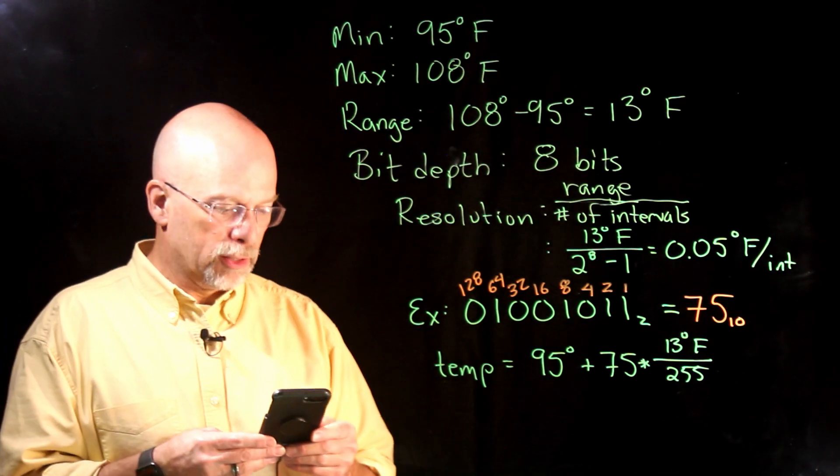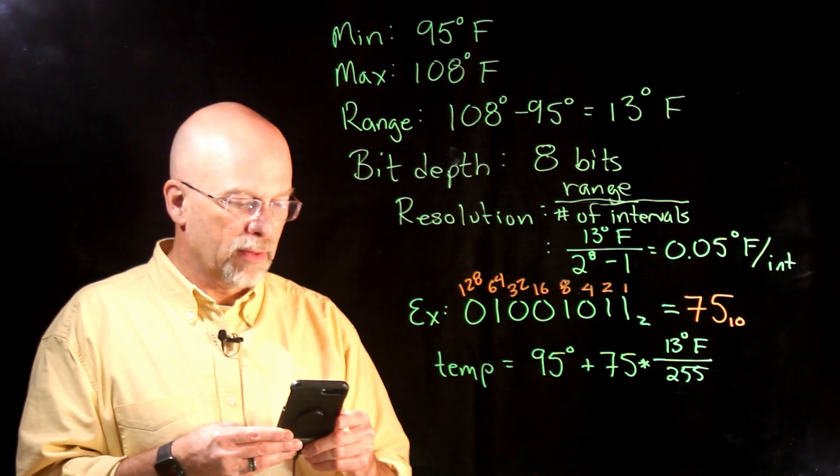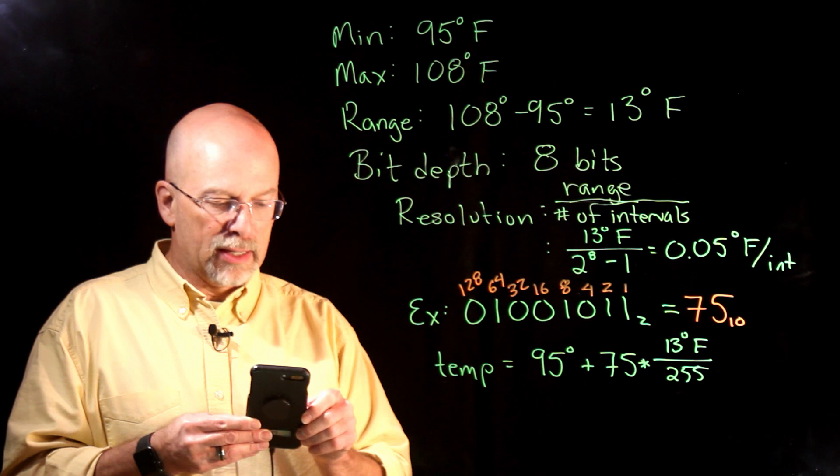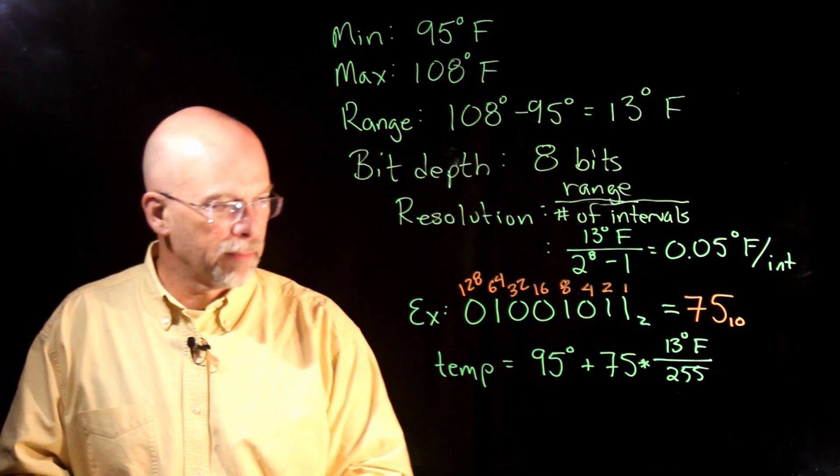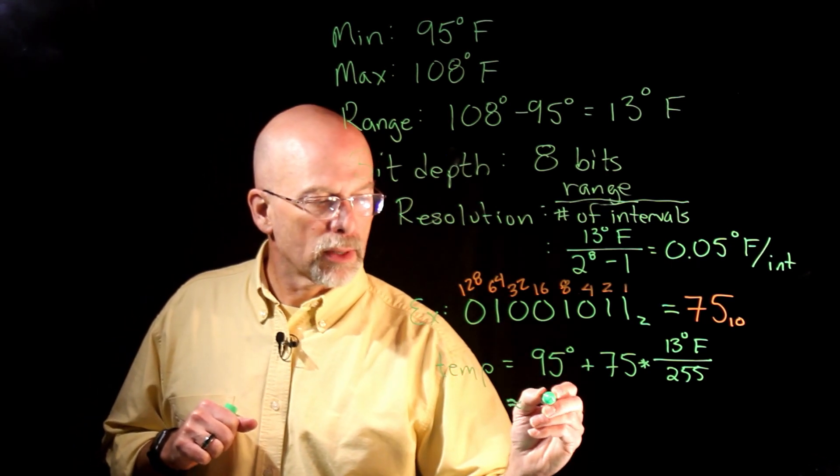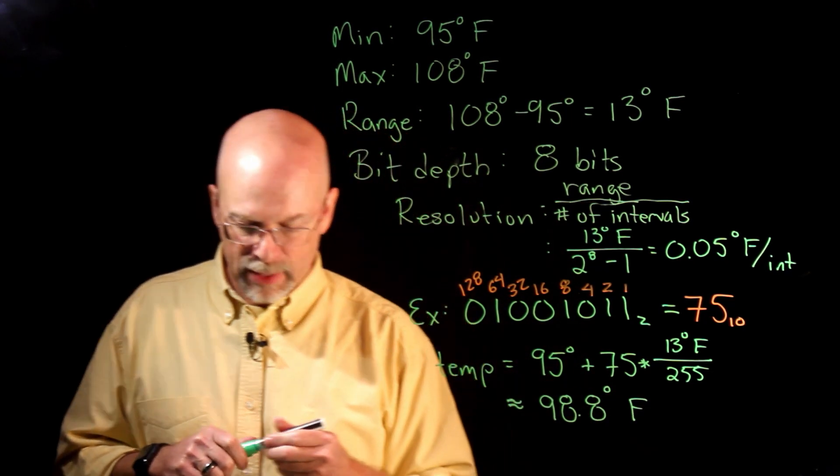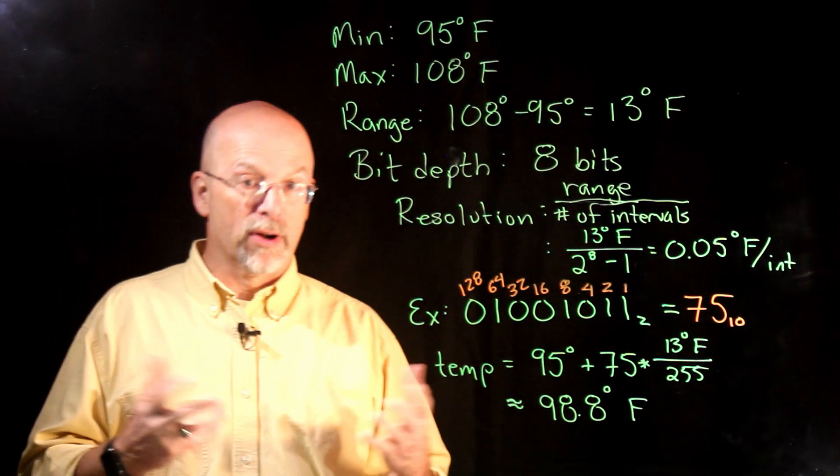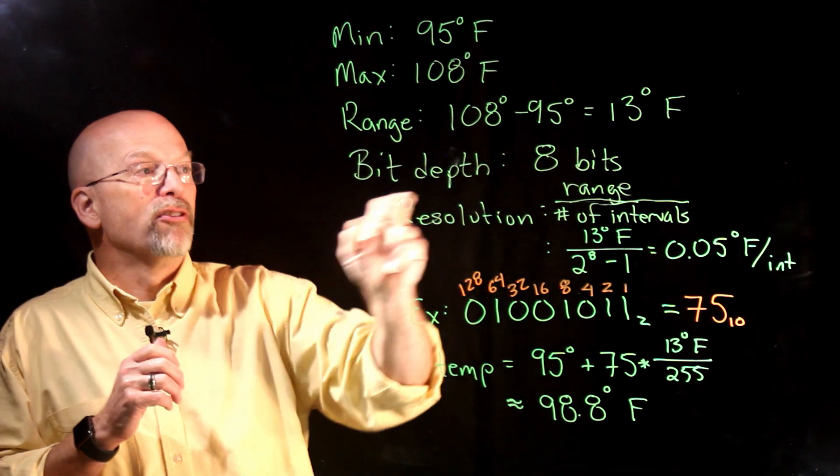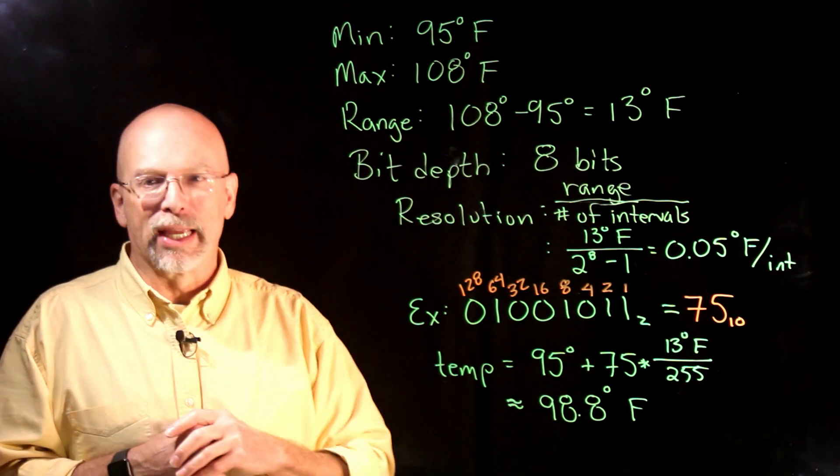Let's figure out what our temperature is. We're looking at 75 times 13 divided by 255. That means we are 3.82 degrees above 95. So we add it to 95, and we get approximately 98.8 degrees Fahrenheit. That's what we will display on the front of our thermometer. This gives us an idea of how we take the range that's given to us by the engineers and the bit depth, which is given to us by our analog to digital converter in order to figure out what analog value we're looking at in the real world.